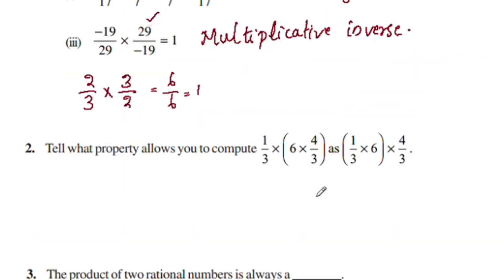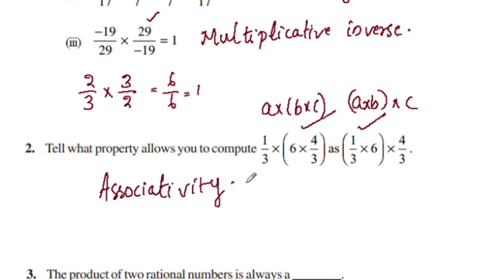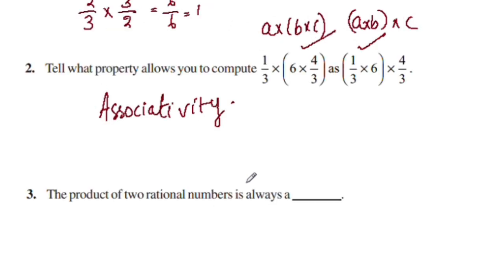Tell what property allows you to compute 1 by 3 into 6 into 4 by 3, as 1 by 3 into 6 into 4 by 3, grouping the last two numbers in a bracket or the first two numbers in a bracket. Here A is 1 by 3, B is 6, C is 4 by 3. This is the Associativity property. The product of two rational numbers is always a rational number.